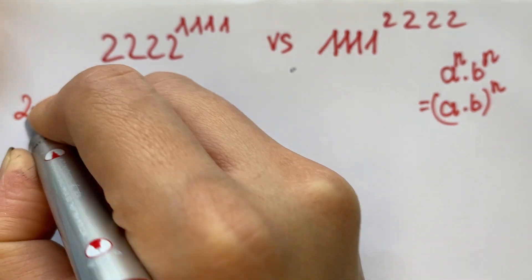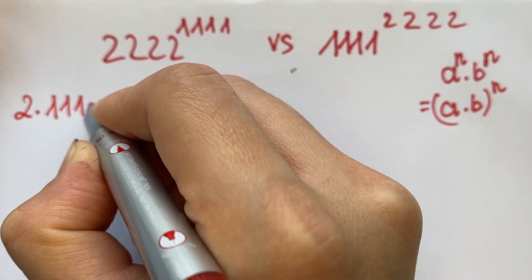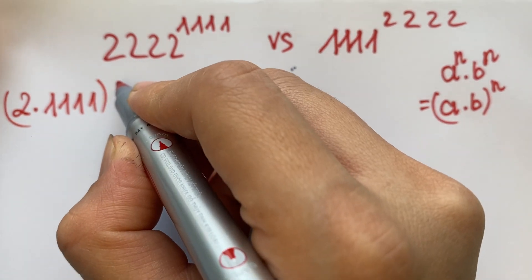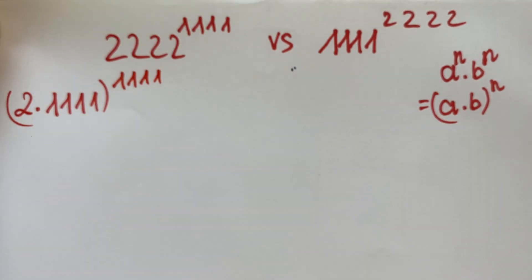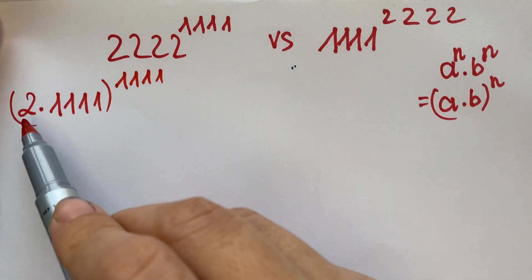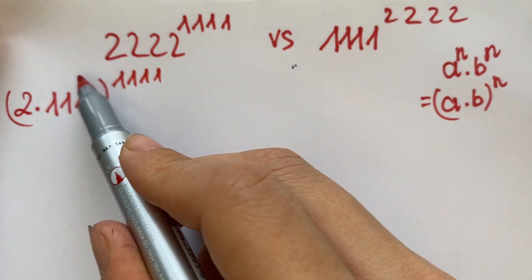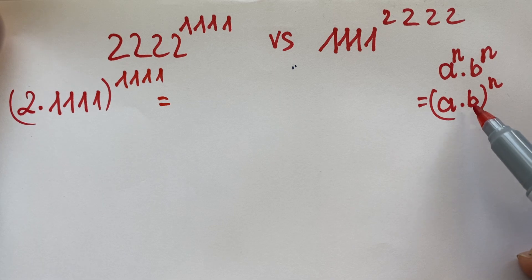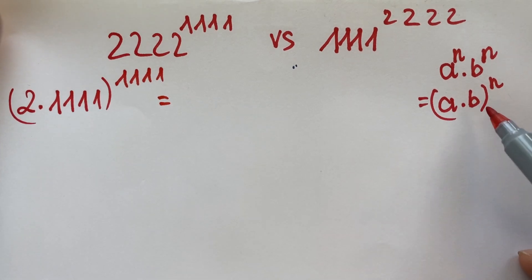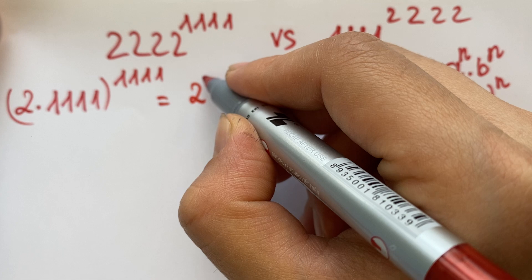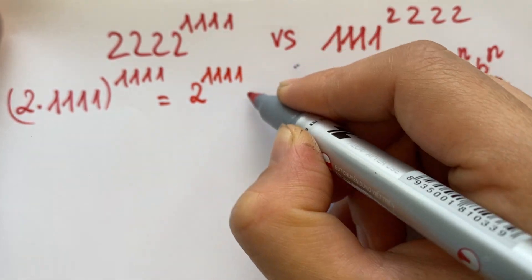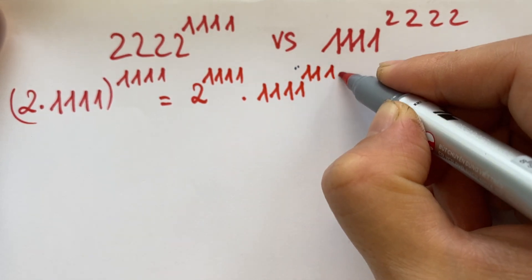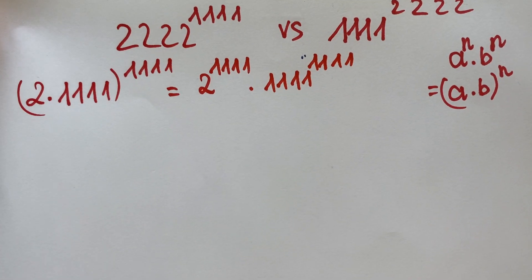2222^1111 is equal to (2 times 1111)^1111, because 2 times 1111 equals 2222. Applying the rule, we get 2^1111 times 1111^1111.